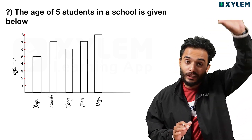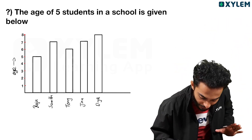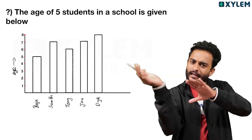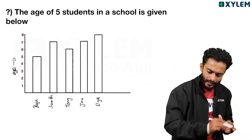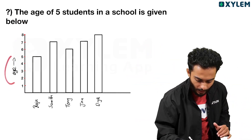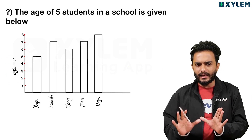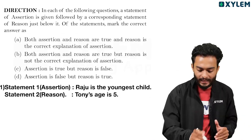The five students are: Raju, Sumit, Tony, Jinu, and Diyan. On the vertical axis, the age values go from 1 to 8. These are the corresponding ages of the students. This is the data we have to use for the assessment.